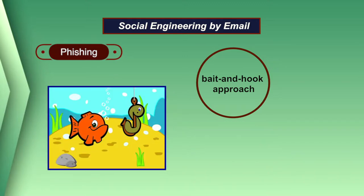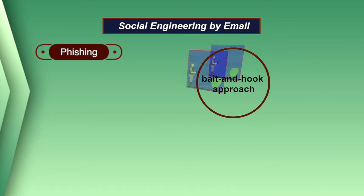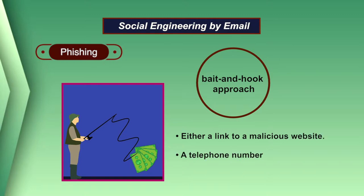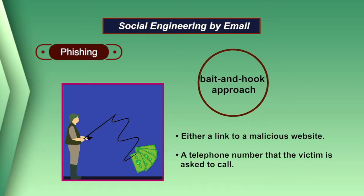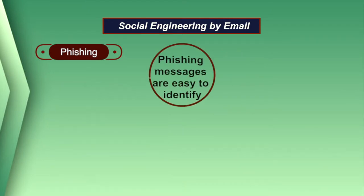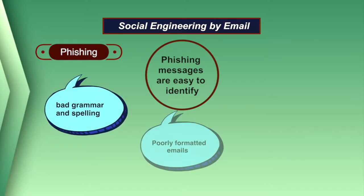The social engineering really takes place during the bait, which should be enticing enough to convince the intended victims to open the message and follow the instructions within it. The hook is the method whereby the social engineer gets information from the victims — either a link to a malicious website or a telephone number that the victim is asked to call. Phishing messages used to be easy to identify thanks to bad grammar and spelling, poorly formatted emails, and obviously fake links.